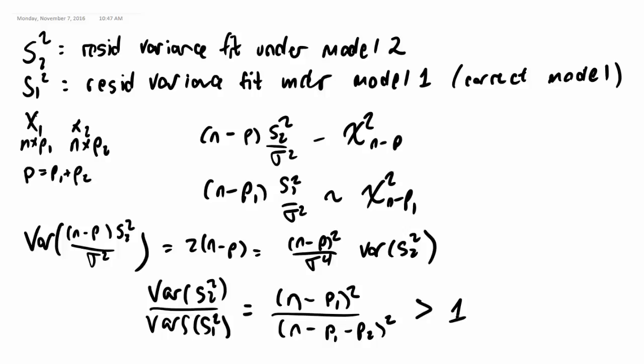So what does this imply? This implies that even though our residual variance estimate is going to be unbiased, the variance of our variance estimate is going to be higher when we include unnecessary covariates.